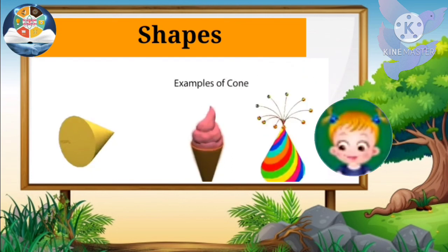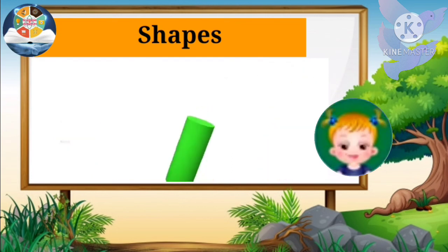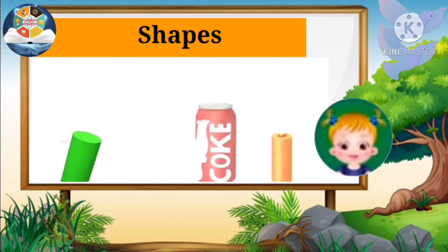are examples of cones. This is a cylinder. Cork, tin, candle, and other items are examples of cylinders.